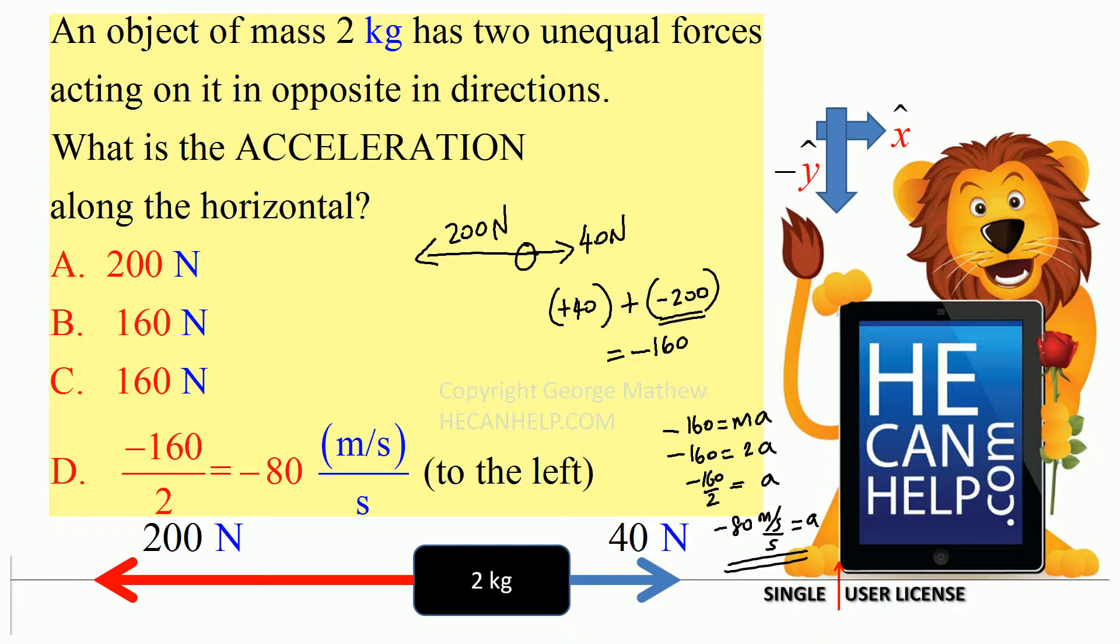Net force is to the left. So your acceleration also should be to the left. So what is the answer? Answer is D. Negative 160 divided by 2 and so this is 2 kg. Negative 160 newtons divided by 2 kg and that is negative 80 meters per second per second.